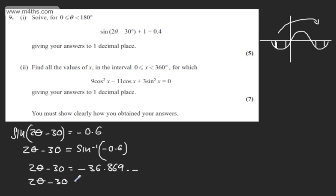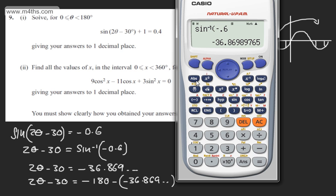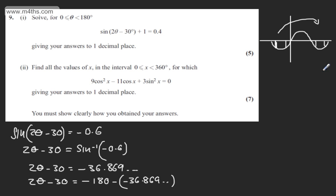I am going to write that 2 theta minus 30 degrees will also be equal to minus 180 plus the quantity here — that is, minus 36.869 and so on. At this stage I am going to solve for theta in both of these cases, noting that subsequent solutions will be 180 degrees on. Remember we are dealing with 2 theta, which cycles every 180 degrees. I'll go ahead and store this in the calculator: shift store A.